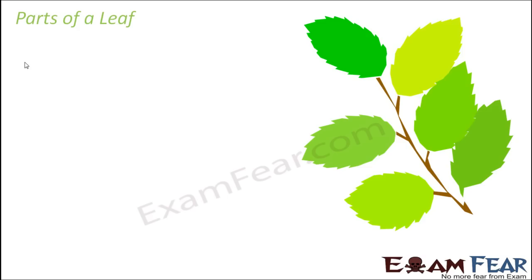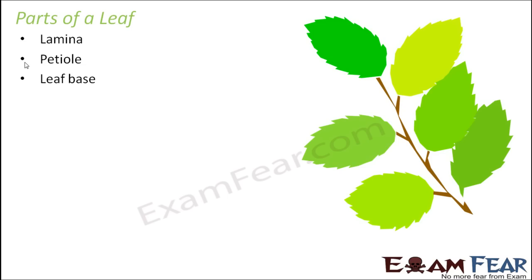Now we will talk about the various parts of a leaf. Lamina, petiole, and leaf base are the three most basic parts of a leaf. Looking at the structure of a leaf, lamina is the green expanded portion of a leaf which we actually see — that is the lamina.